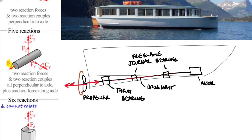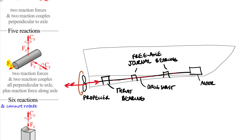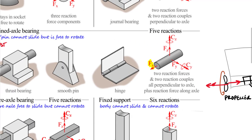The other bearings along the drive shaft were journal bearings — free axle bearings. These are used after the thrust bearing because the axial force from the propeller had already been picked up by the thrust bearing. The journal bearings are really just holding that drive shaft in place and keeping it rotating in a straight line. If a journal bearing failed and the drive shaft started to flex while spinning at hundreds or low thousands of RPM, it would not be safe. That gives you an idea of where you might use a thrust bearing versus a journal bearing in an engineering design context.